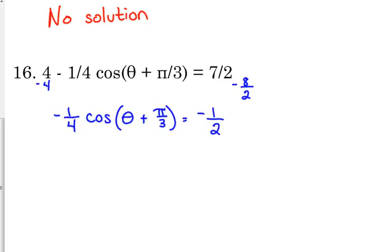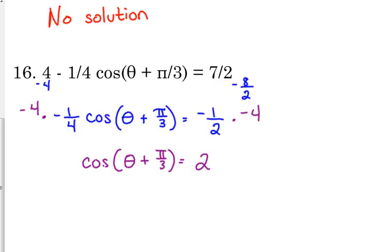That gives us negative one-fourth cosine(θ + π/3) = negative one-half. Multiplying both sides by negative 4 gives cosine(θ + π/3) = 2. What did I just say? Cosine and sine can't be greater than 1. This is another example of there being no solution — because cosine of something equals 2. It's not because of the plus π/3 inside; it's because cosine equaling 2 is impossible.